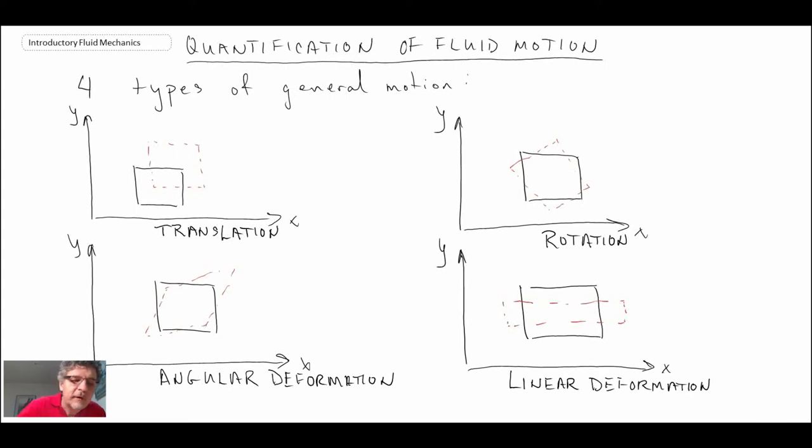So there we have the four different types of motion, general motion in fluid mechanics. We have translation, which is basically just a fluid moving in the x and y direction, could be the z as well. We have other motions: rotation, angular deformation which is really shear related, and then linear deformation which would be expansion or contraction of the fluid.